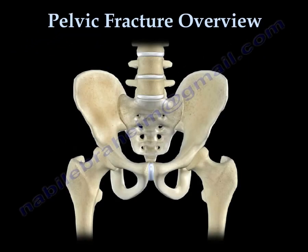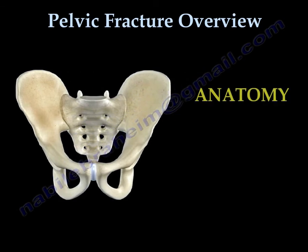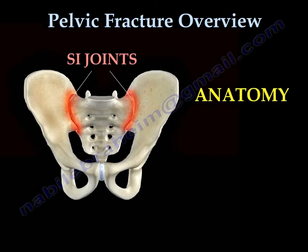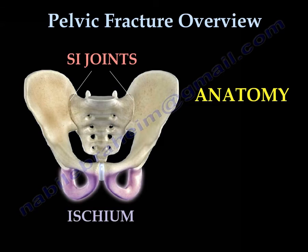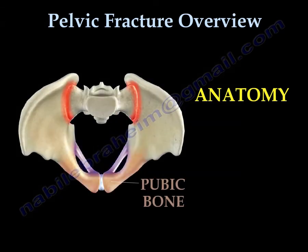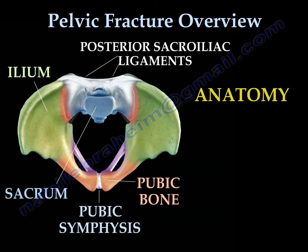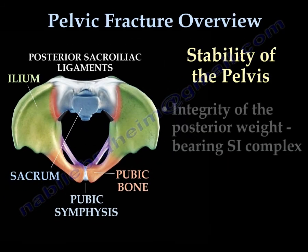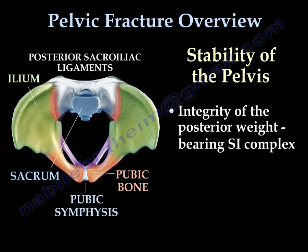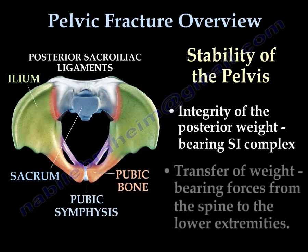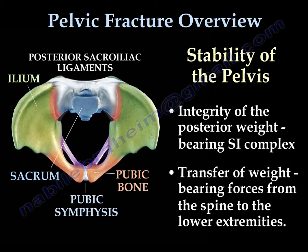Pelvic fracture overview: Anatomy. You find here the SI joint, the ischium, pubic bone, symphysis pubis, ilium, sacrum, and the strong sacroiliac ligament. The sacroiliac joint has posterior ligaments that are very strong, and the stability of the pelvis depends on the integrity of the posterior weight-bearing sacroiliac joint complex. Transfer of weight from the spine to the lower extremity occurs through that joint.